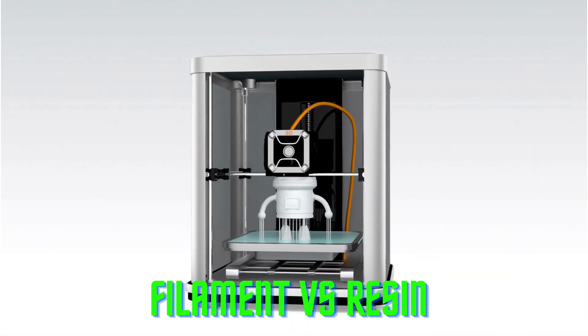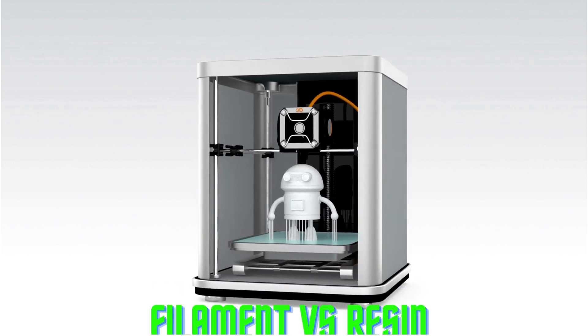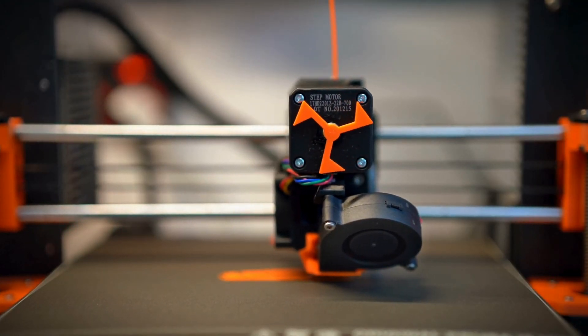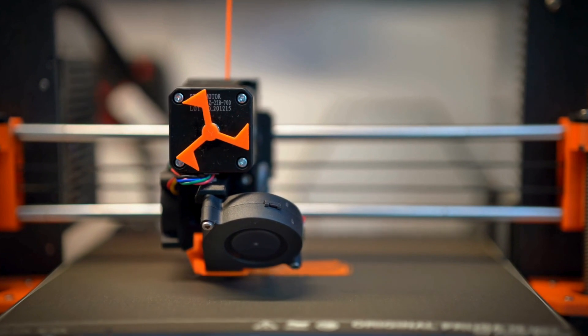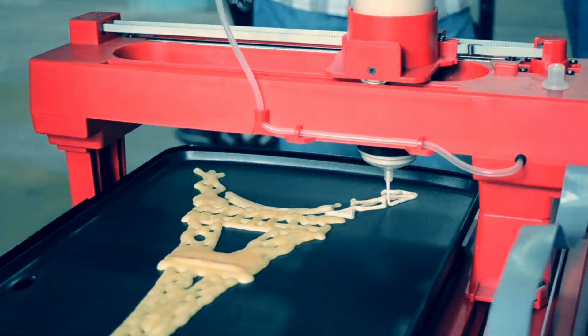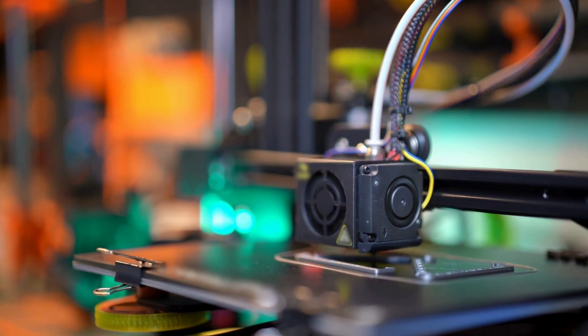Today we're going to compare two types of 3D printers: filament and resin. 3D printing is a process of creating a physical object from a digital model, layer by layer. 3D printers can use plastic, metal, or resin as raw material.